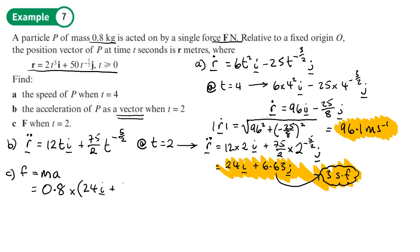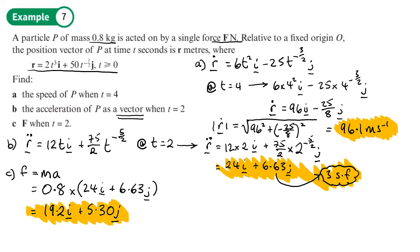The force is a vector, so we can work out its magnitude and direction. Multiplying: 24 × 0.8 = 19.2, giving 19.2i; and 6.63 × 0.8 = 5.30, giving +5.30j. So F = 19.2i + 5.30j. You should now be able to do Exercise 8D on pages 171 to 173.